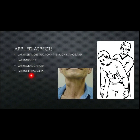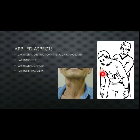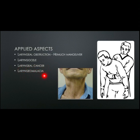Now towards the applied aspects: laryngeal obstruction, laryngocele, laryngeal cancer, and laryngomalacia. Laryngeal obstruction is a condition in which a person experiences continuous choking due to entry of a foreign body into the larynx. This can be corrected by the Heimlich maneuver — abdominal thrust upwards and backwards — which results in expulsion of the foreign body. Laryngocele is dilation of the saccule of the larynx. Laryngomalacia is softening of the laryngeal tissues, which causes noisy breathing in infants.